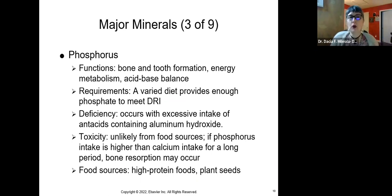The next one I'm going to go over is phosphorus. Phosphorus is also involved in bone and tooth formation, energy metabolism, acid-base balance. Again, it is a varied approach based on age and needs for specific people at different stages of their life. Now, if you have a deficiency, how can this occur? When you're taking a lot of antacids containing aluminum hydroxide, it can actually cause a deficiency of phosphorus.